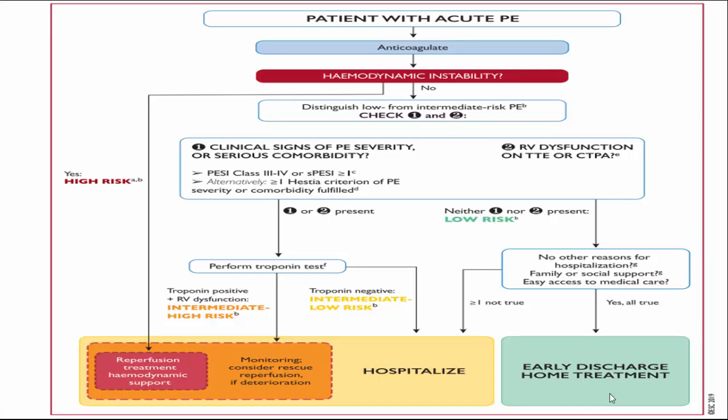According to the initial management algorithm, this patient should be anticoagulated and hospitalized with very close monitoring, because she can deteriorate at any moment requiring escalation to high-risk management — either systemic thrombolysis, catheter-directed therapy, or surgical intervention.